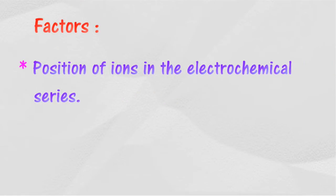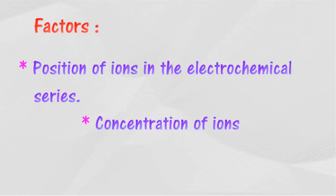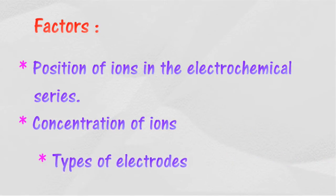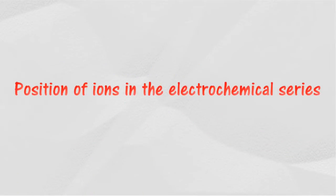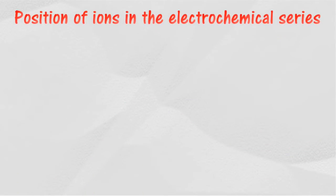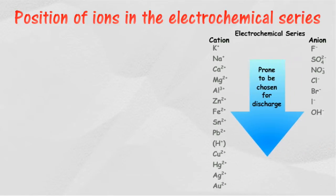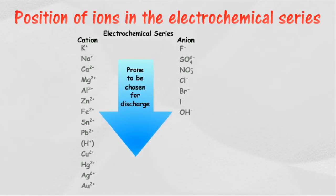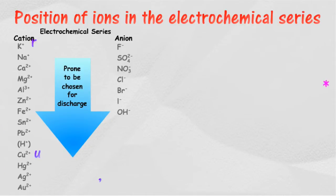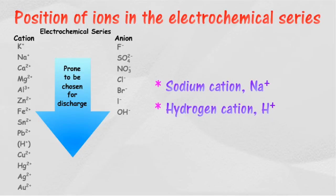The first factor is the position of ions in the electrochemical series. An ion located at the lower part of the electrochemical series is more prone to be discharged compared to other ions above it. For example, both sodium cation and hydrogen cation in an electrolyte solution will be attracted to the cathode.